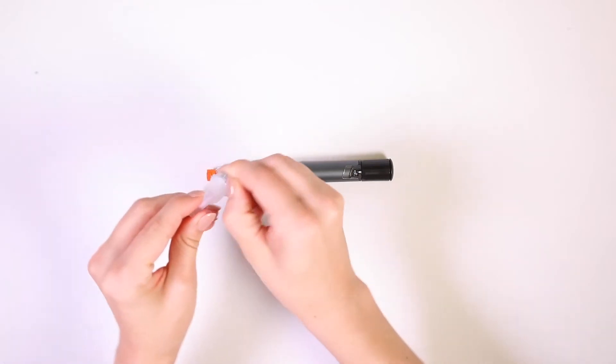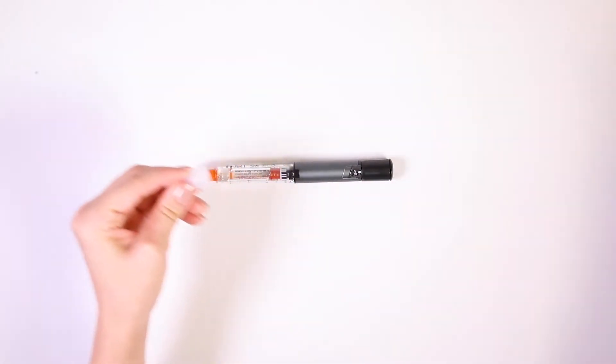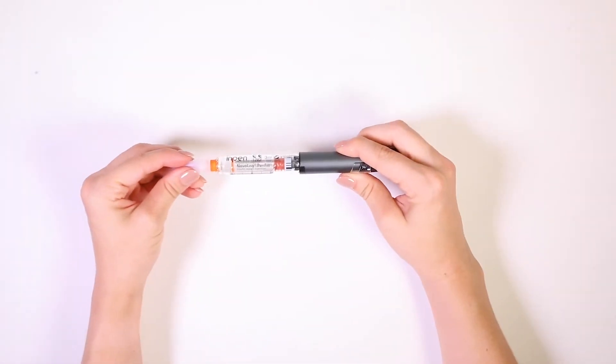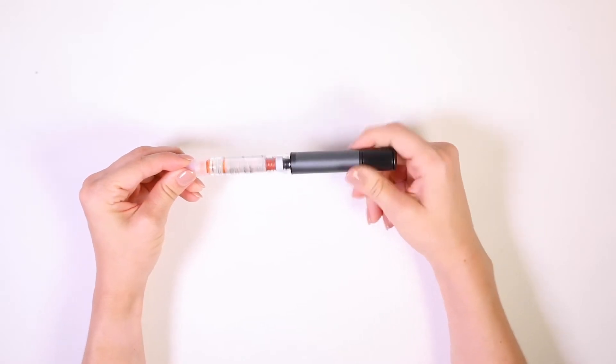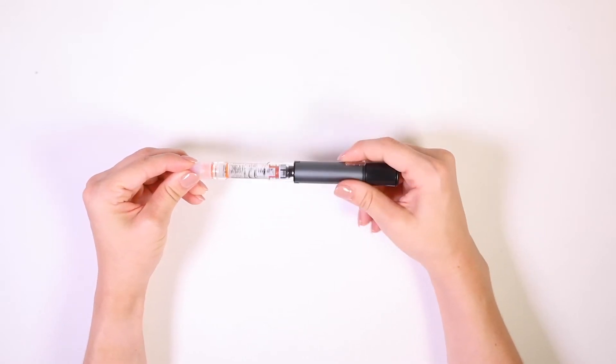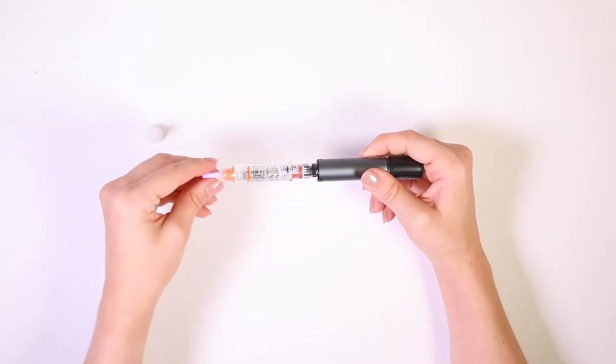To place the insulin needle, remove the needle package and put the needle straight into the tip of the InPen. Then twist the pen clockwise until it's tight. Next, pull off the outer needle cap and save it for needle removal later.